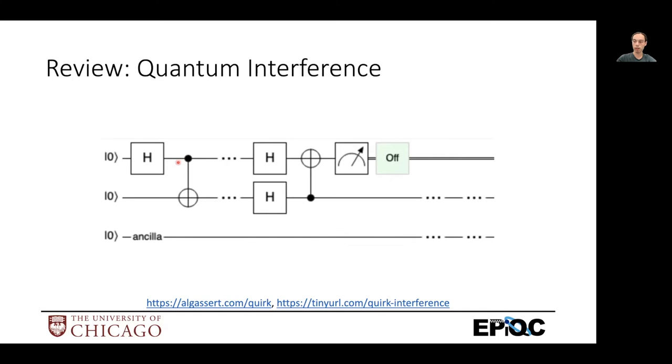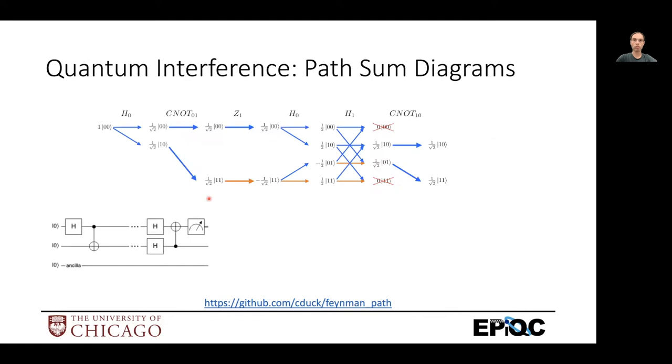So the technical term for this is phase kickback. But what this does is show us that if we leave intermediate states of our computation around on extra qubits that will ruin the effect of the quantum computation. And this happens because it prevents quantum interference from occurring.